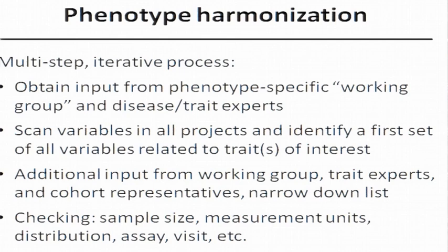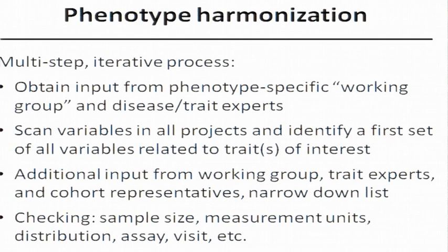The process of phenotype harmonization is multi-step and iterative. Usually in consortia efforts it starts with a point person or working group who works with phenotype-specific working groups or project teams as well as experts on the disease or trait. There's a first process where you scan through all the variables — starting with 55,000 and whittling down. For each phenotypic category you collect all related variables, then go back to the working group and experts to hone in on a common definition that can be reached across all studies. Throughout the process you consider sample size, measurement units, distribution of the trait, assay information, what visit it came from, et cetera.